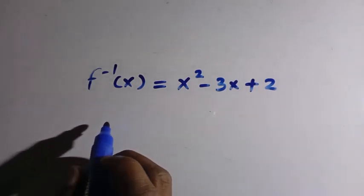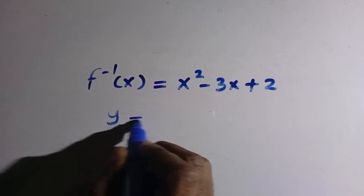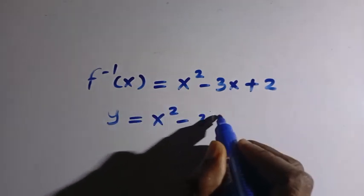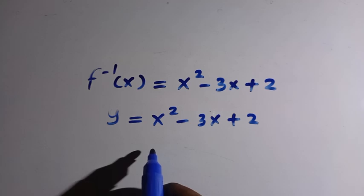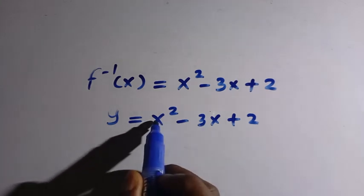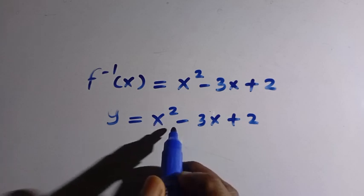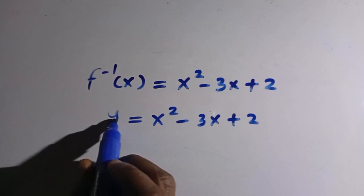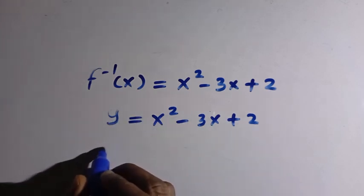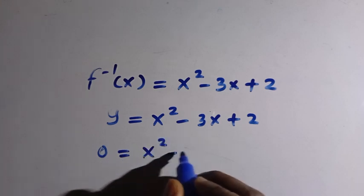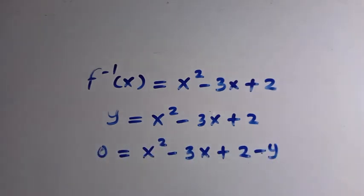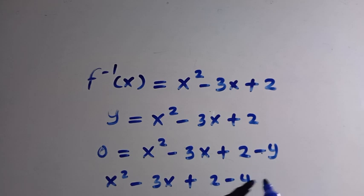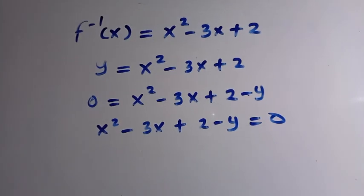Since f inverse of x equals y, we replace it to get y equals x squared minus 3x plus 2. We need to make x the subject of the formula. We transfer y to the other side, giving 0 equals x squared minus 3x plus 2 minus y, or equivalently x squared minus 3x plus (2 minus y) equals 0.